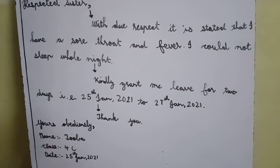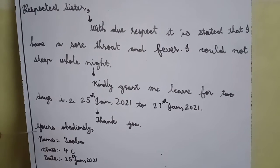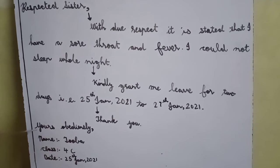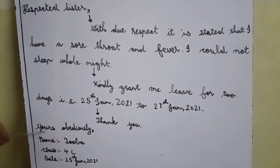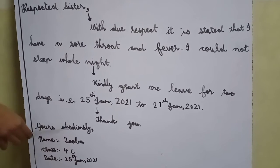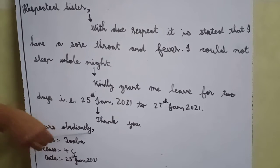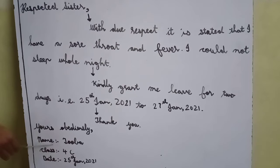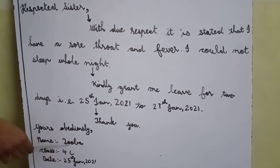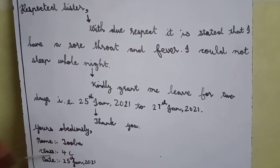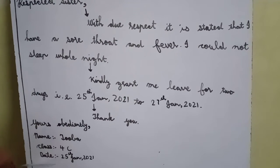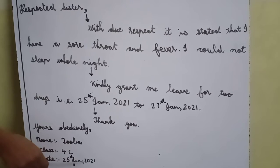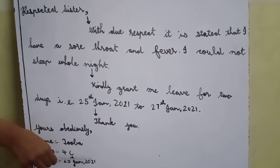From a new line, after the margin line, write: Yours obediently comma. Next line — name: Tuba, class: 4C, date: 25th January 2021.